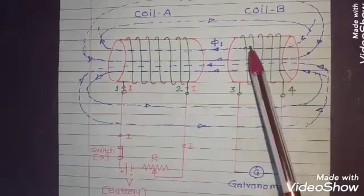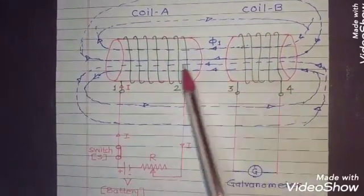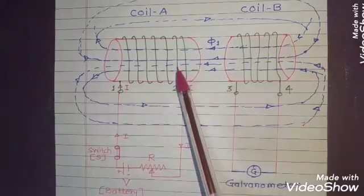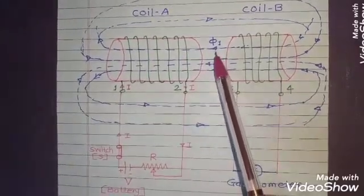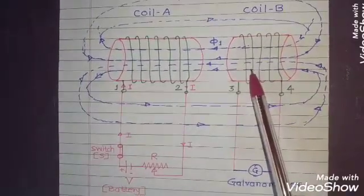Now, this phi1 flux which is linking with the coil B. Up to this, the coil A has produced an MMF, it has produced a magnetic flux. Out of that magnetic flux, phi1 is the amount of flux that is linking with coil B.